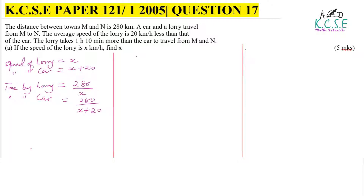The lorry takes 1 hour 10 minutes more, so when you take the time taken by the lorry — 280 divided by X — and subtract the time taken by the car, that difference equals 1 hour 10 minutes. One hour 10 minutes is equivalent to 70 minutes, and 70 minutes converted to hours gives 70 over 60, which is 7 over 6. This expression now represents the time difference, and working it out gives us the value of X.